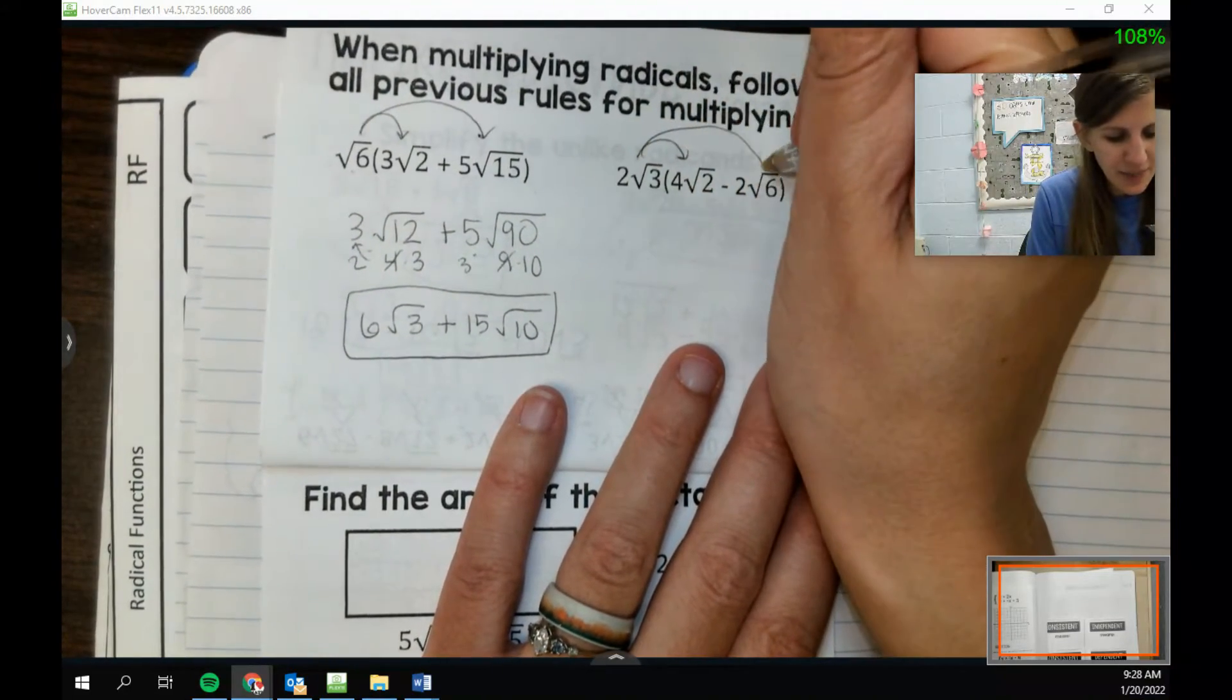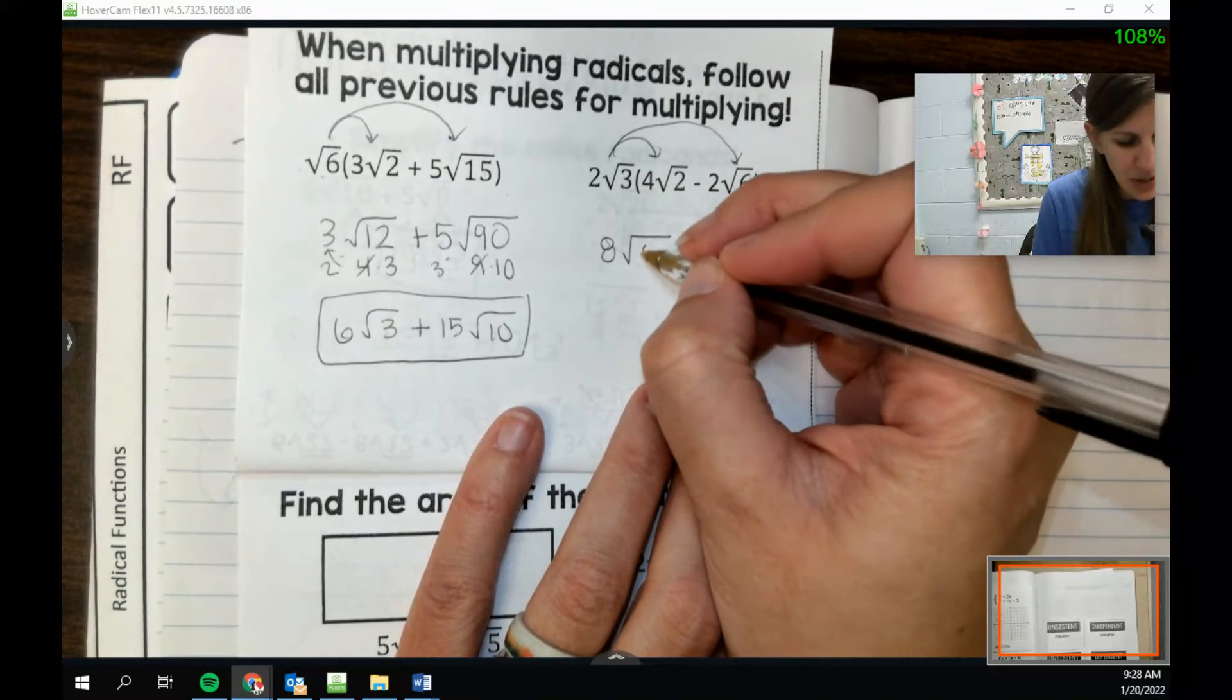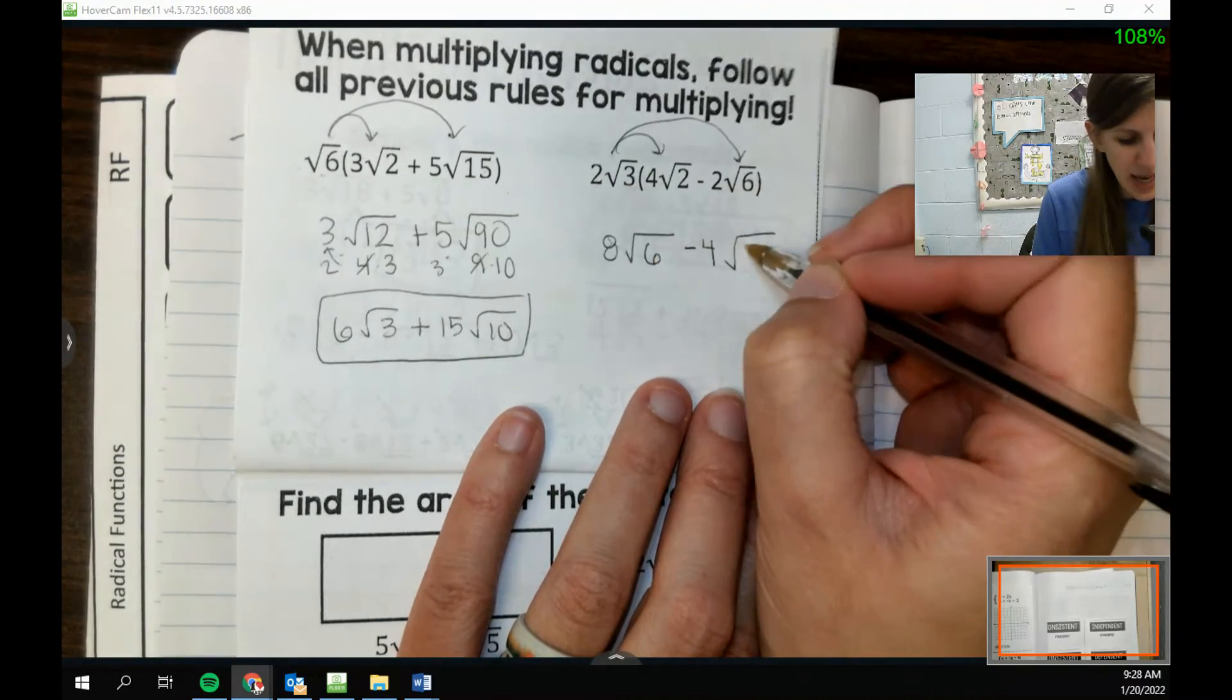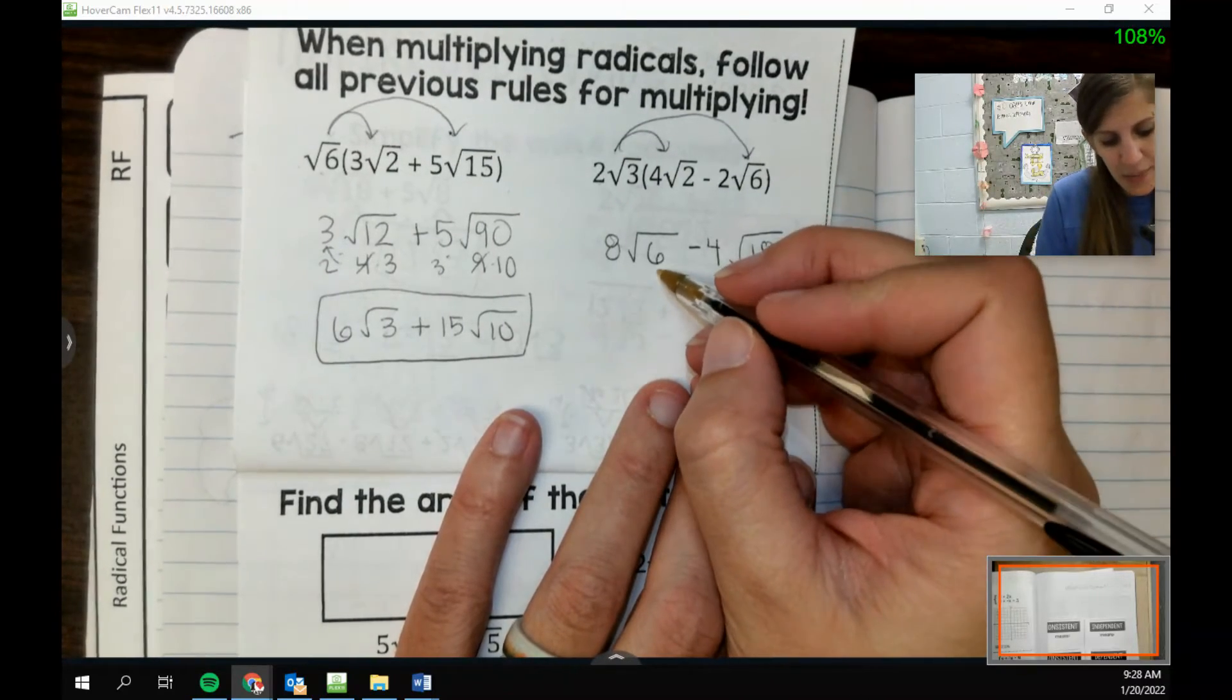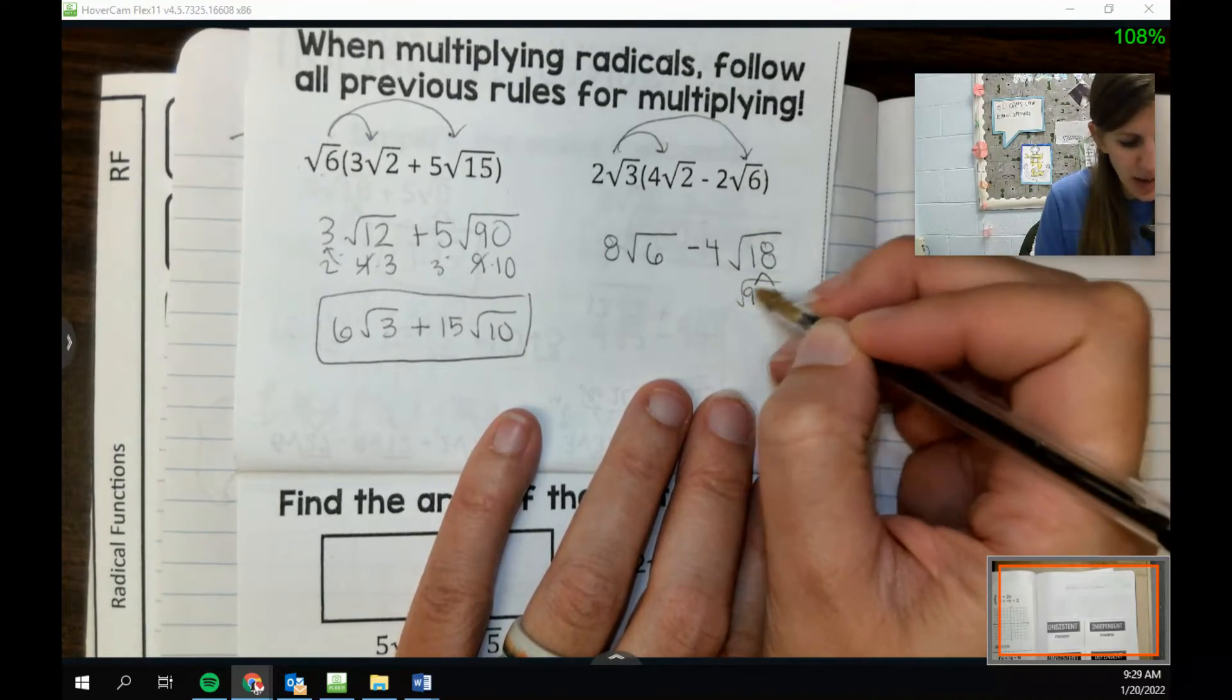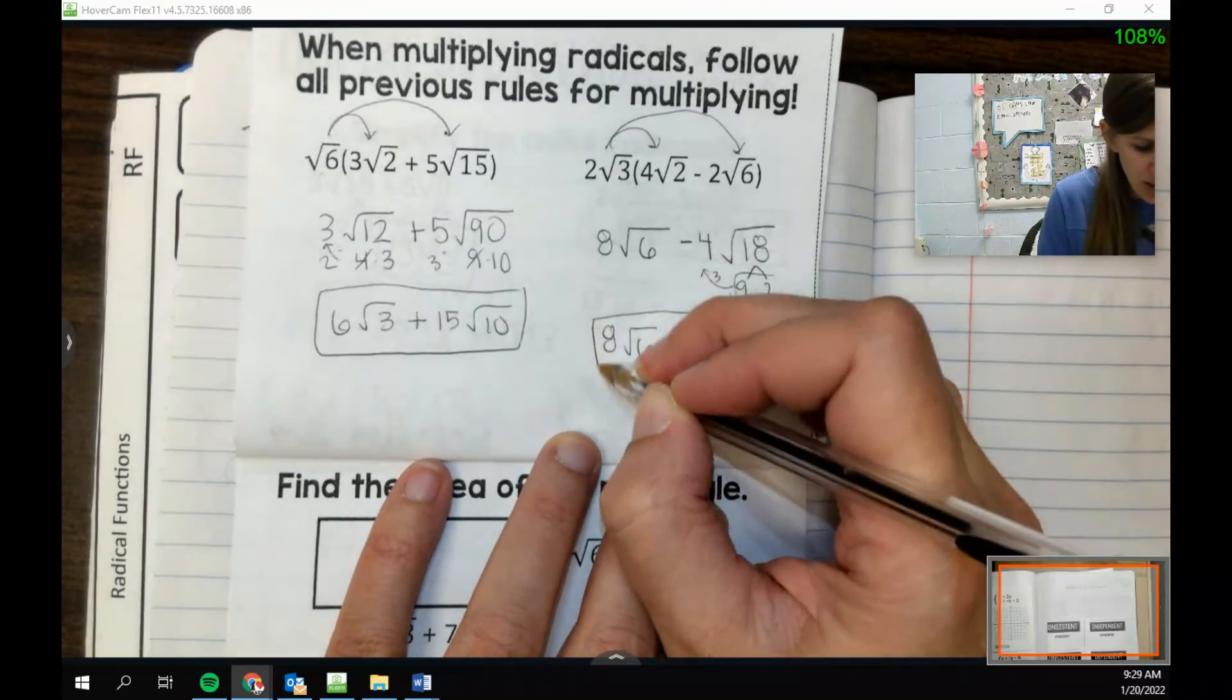Let's try distributing here. So we want to do 2 times 4, and then 3 times 2. Then the 2 times 2, and then the 3 times the 6. The 18 I can break up, that's 9 and 2. So I will break that up and bring the 3 out. But I still don't think I'm going to be able to add these. Minus 12 root 2. Because they're not the same root.